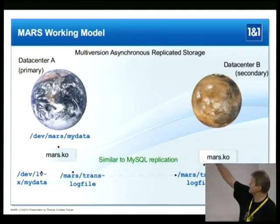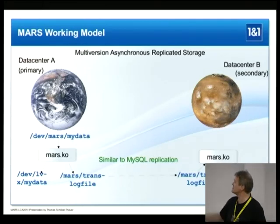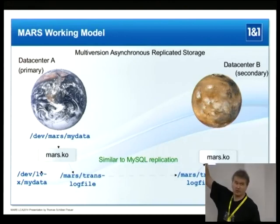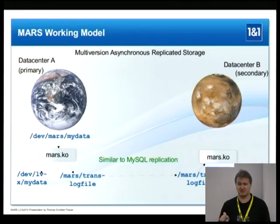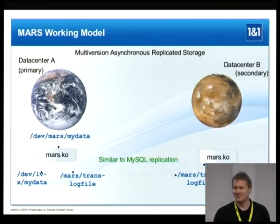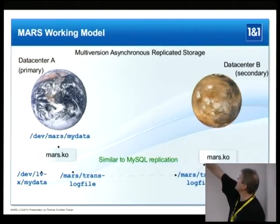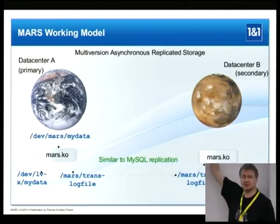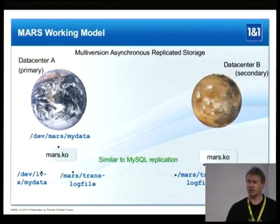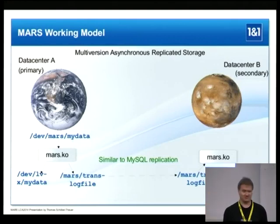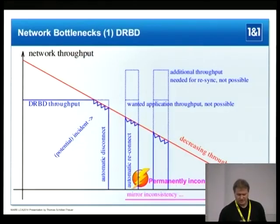Then the transaction log files are replicated over a long distance to somewhere else — in principle the architecture of MARS is tailored for arbitrary long distances. This is then applied to your replicated data, meaning the same operations are executed in the same order as originally, but it may happen later — 10 minutes later, or whatever.